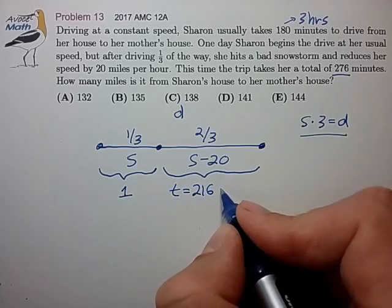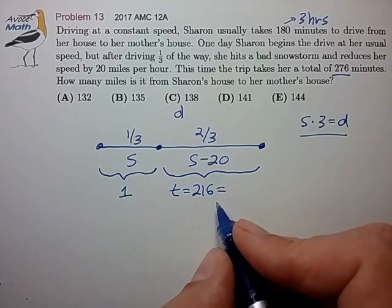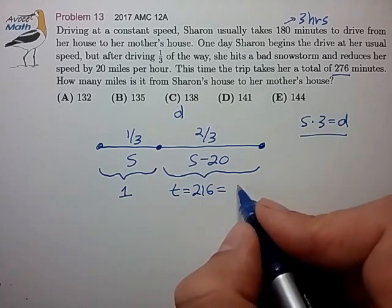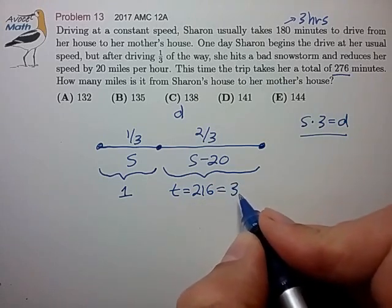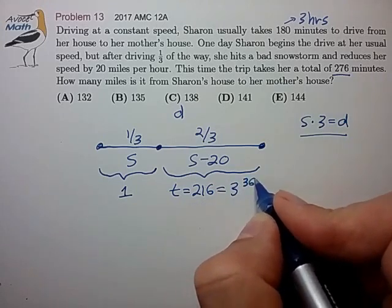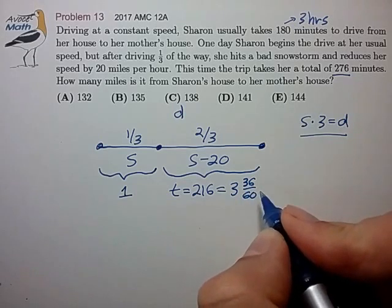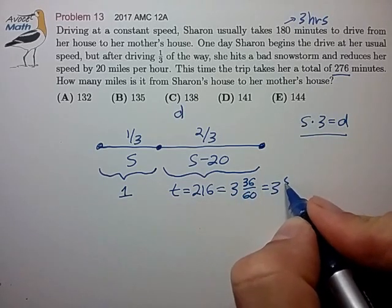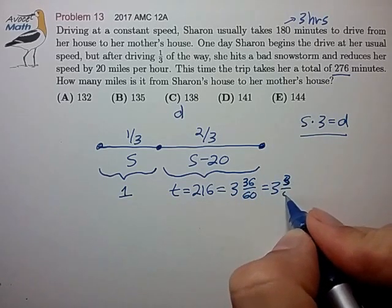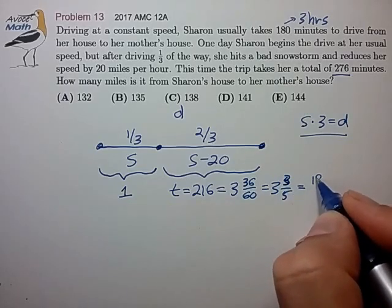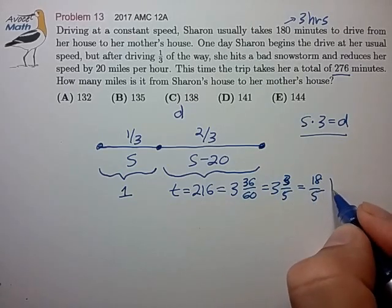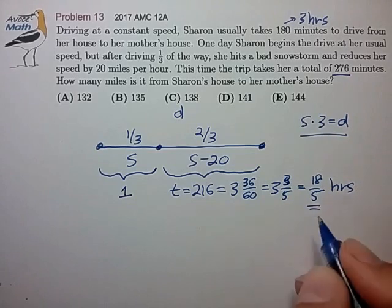That's an awkward number. Let's see if we can try to reduce that to a more manageable fraction. That's 3 hours and 36 minutes. That's 3 hours and 3 fifths, or 18 fifths hours. So, that's probably the most convenient form.